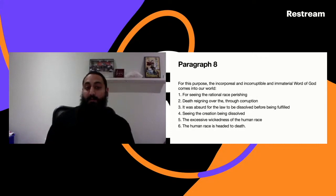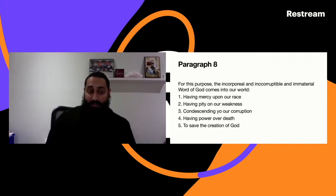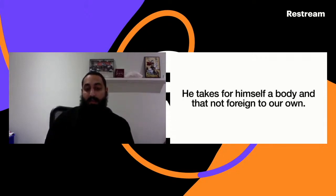God comes into the world. Why? He's going to list a bunch of reasons. Number one, for seeing the rational race, people were perishing, death reigning over them through corruption. It was absurd for the law to be dissolved before being fulfilled. Seeing the creation being dissolved, the excessive wickedness of the human race, and the human race is headed to death. He also adds having mercy on our race, having pity on our weakness, condescending to our corruption, having power over death and to save the creation of God.